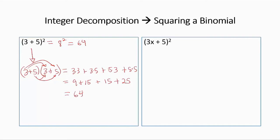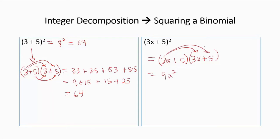Now let us apply that to squaring the binomial (3x plus 5) — it's just the binomial times itself. Distributing: 3x times 3x is 9x squared; 3x times 5 is 15x; 5 times 3x is 15x; and 5 times 5 is 25. Combining like terms, we have 9x squared plus 30x plus 25.